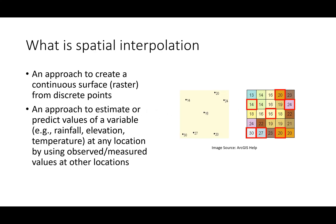In this unit we are going to learn some spatial interpolation methods in GIS. Before we do that, let's understand what spatial interpolation is. What you see on this slide are measurement points — the points where we have some measurements. In hydrology and water resources applications we are interested in continuous surfaces of variables. Spatial interpolation is an approach to create a continuous surface, which in GIS means a raster surface, created from discrete points.